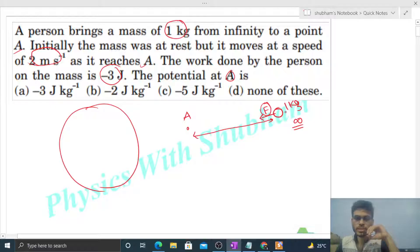Further, there will be a gravitational force of attraction by the earth on this body, so let's write it F_G. Initially it was at rest, and finally it started moving with a speed of 2 meters per second when it reaches point A.